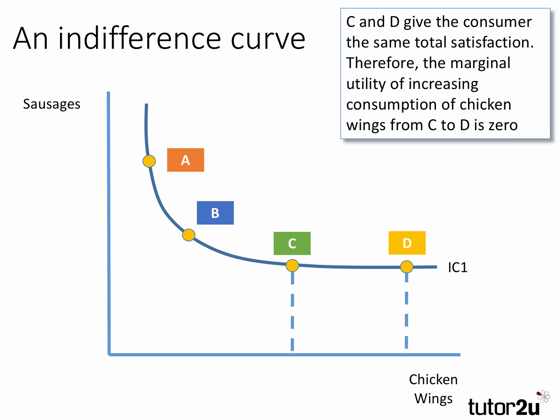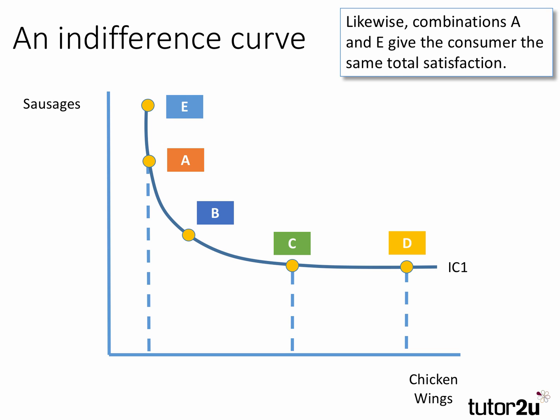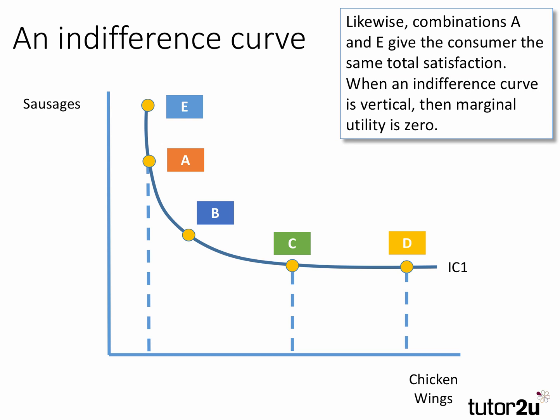Interestingly, if C and D lie on the same curve, although we're consuming the same amount of sausages from C to D and increasing our consumption of chicken wings, it gives no extra total satisfaction. Therefore the marginal utility of increasing chicken wings from C to D must be zero. Likewise, if we go up the indifference curve — consider combinations A and E — the consumer is indifferent between those combinations; they give the same total satisfaction. When an indifference curve is vertical or horizontal, the marginal utility of extra units is zero.